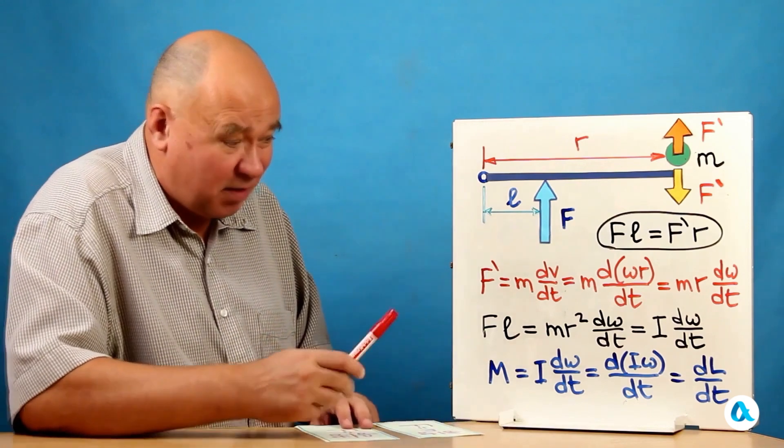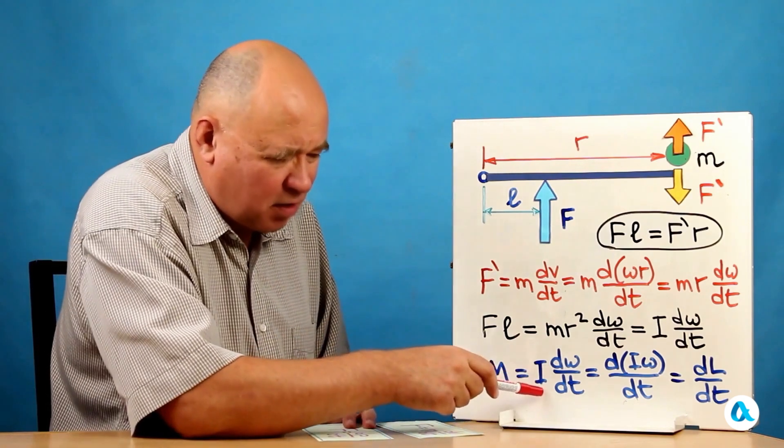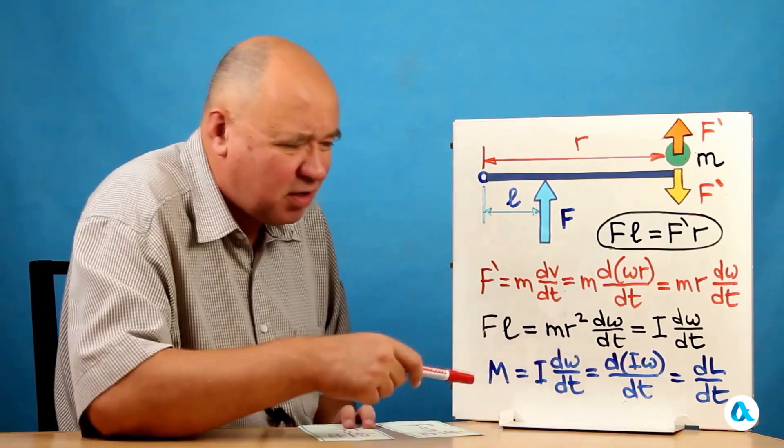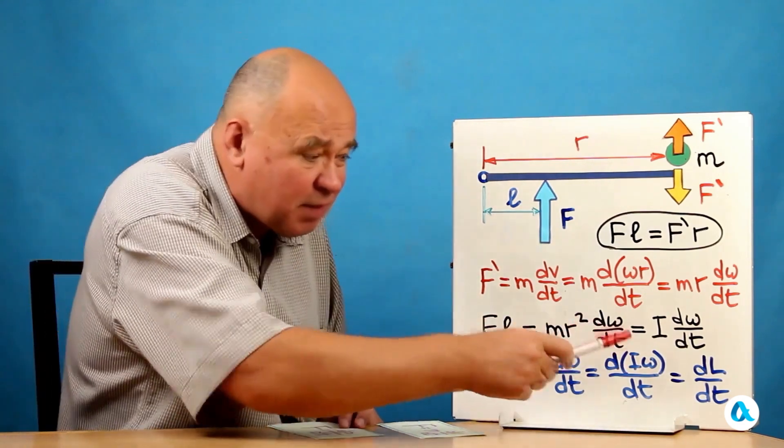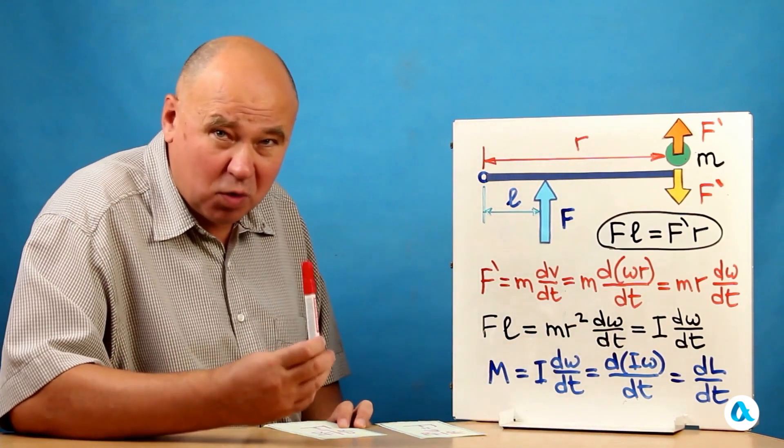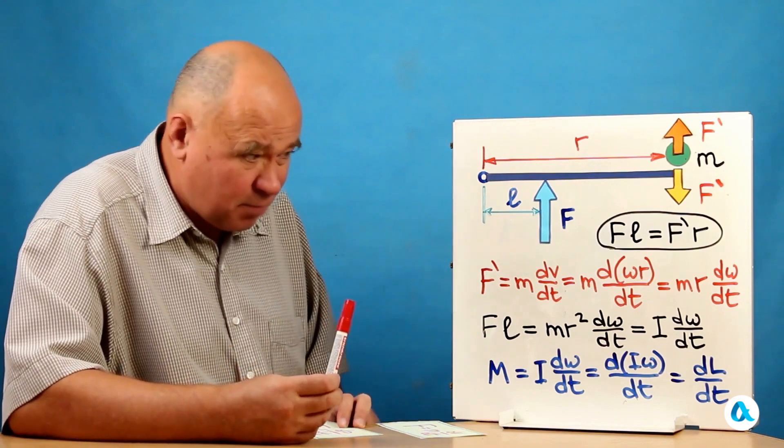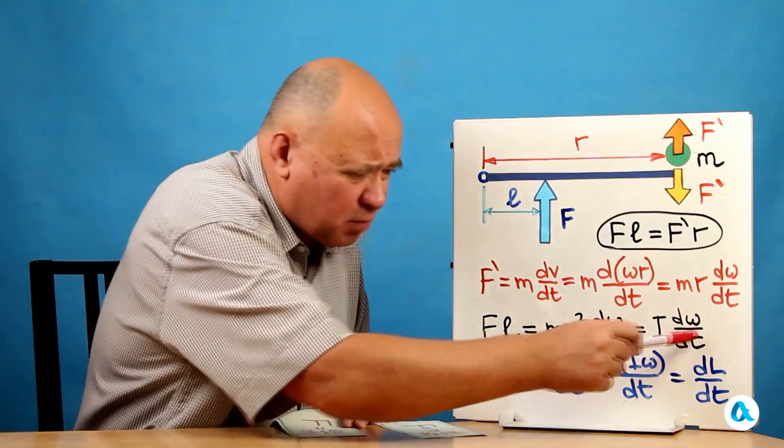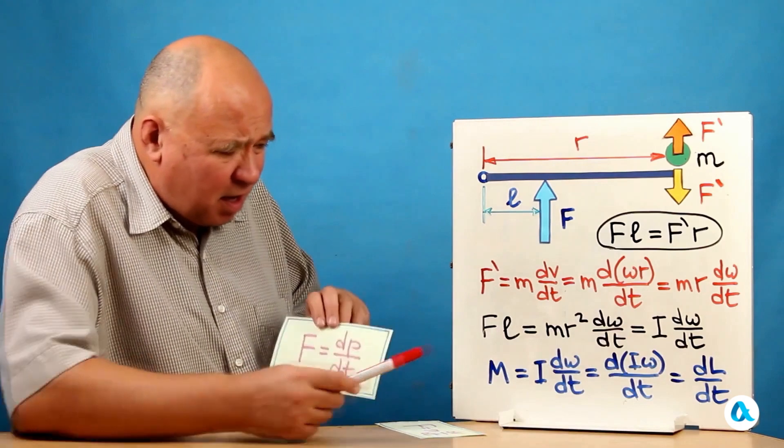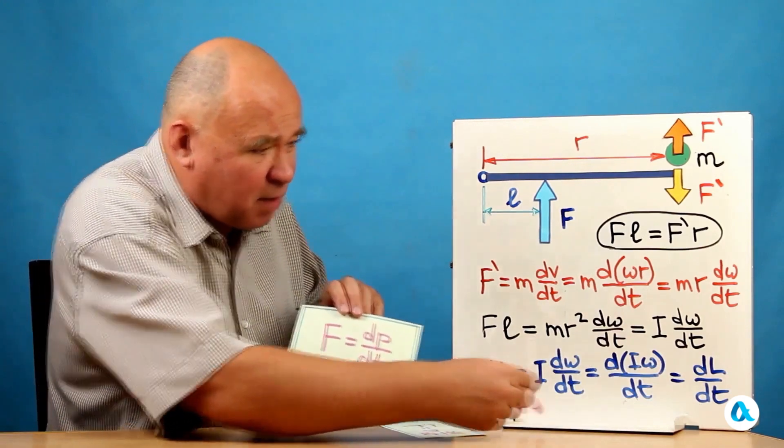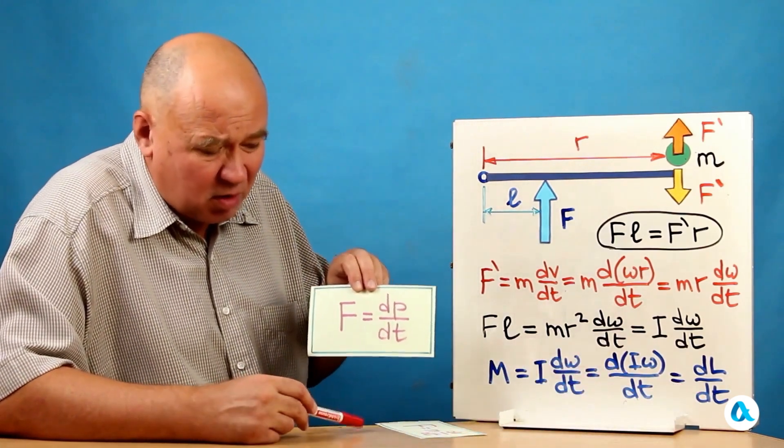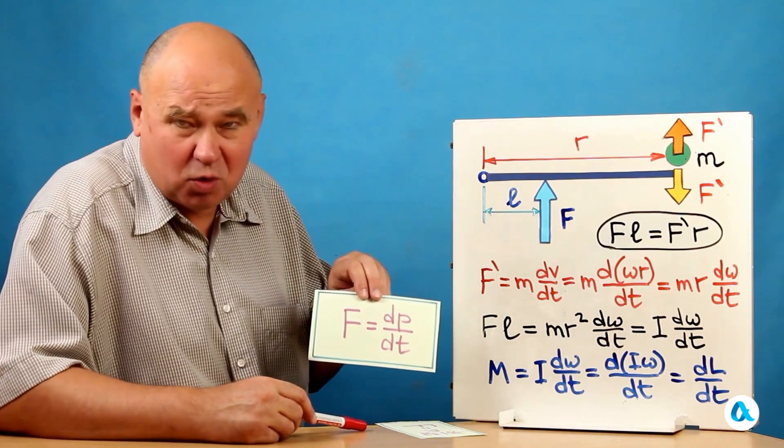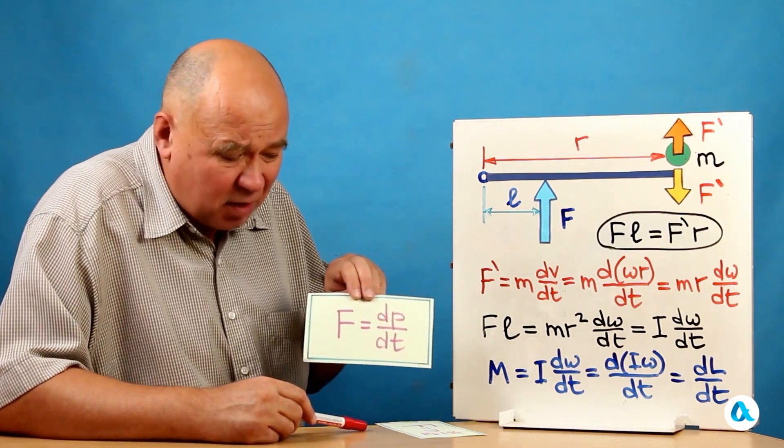And finally, the last formal action. I will place the moment of inertia under the differentiation sign. Here I will have d(IΩ)/dt. And this whole thing, along with Ω, is called the momentum. We rewrite all of this in the form of dL over dt. And now this is the formula: M equals dL over dt. Its analog in translational motion is the formula for Newton's second law, written as F equals dp/dt.